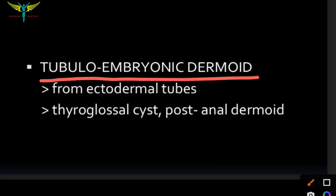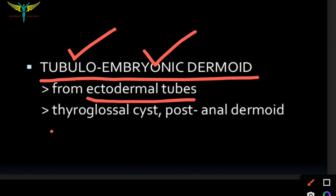The tubuloembryonic dermoid, as the name indicates, usually arises from tubular structures and occurs at birth. It typically arises from ectodermal tubes like the thyroglossal cyst, which occurs in the thyroglossal duct, and the post-anal dermoid.